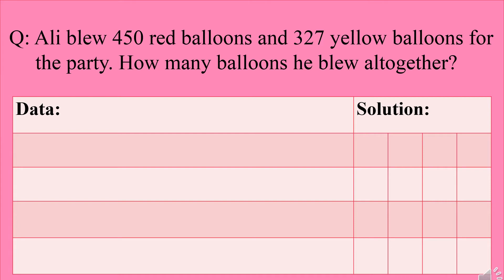So firstly I'm going to read the problem. Ali blew 450 red balloons and 327 yellow balloons for the party. How many balloons did he blow altogether? So here we are saying that Ali has blown 450 red balloons and 327 yellow balloons.